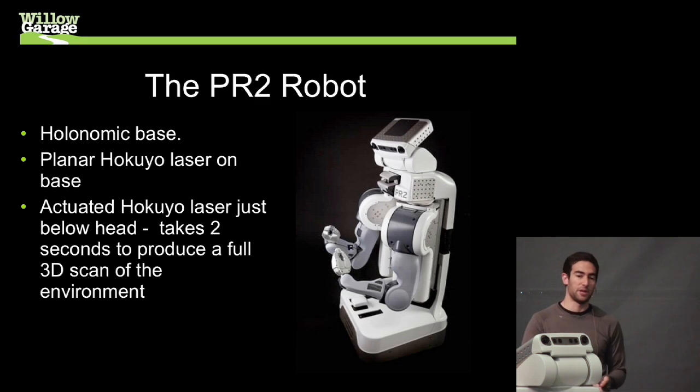And we want to do this on the PR2 robot, which you're well aware of its capabilities, but it's got a pseudo-holonomic base. It's got a planar Hokuyo laser, which we use for making maps and also for obstacle avoidance. And it's also got an actuated Hokuyo that we tilt at about a two-second period. So it takes two seconds to take a full 3D scan of the environment.